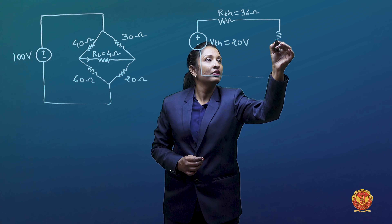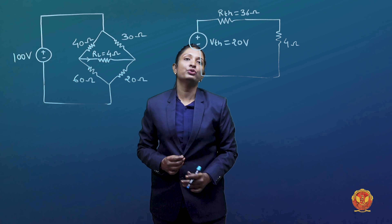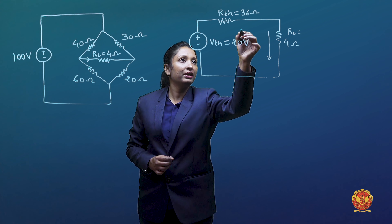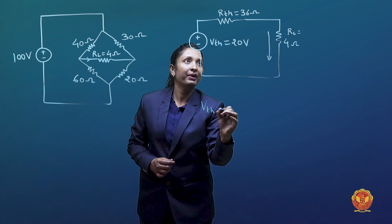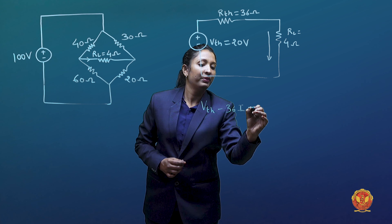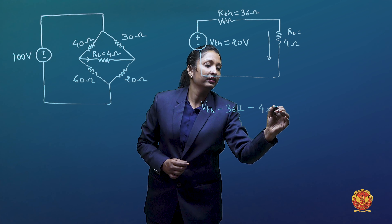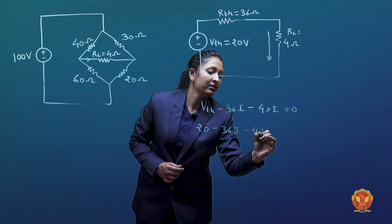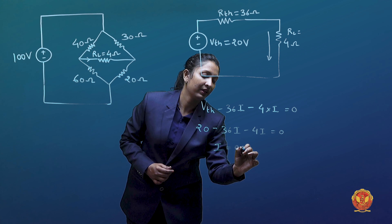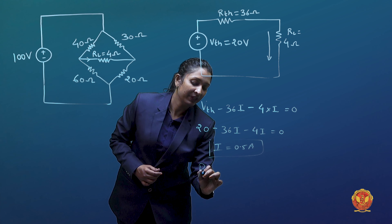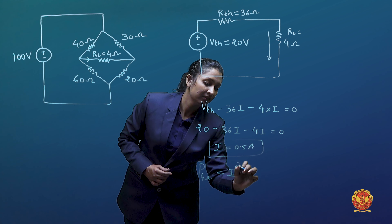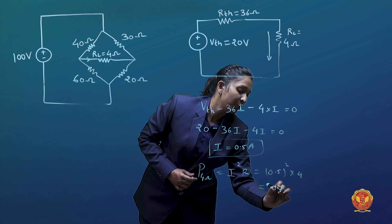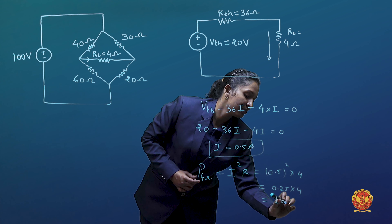With the 4 ohm load connected, if you ask what is the current through the load, we apply KVL around the loop: VTH minus 36 times I minus 4 times I is equal to 0. So 20 minus 40I equals 0, and I is equal to 0.5 A. Similarly, power dissipated by the 4 ohm load is I squared times R, which is 0.5 squared into 4, equal to 0.25 into 4, which is 1 watt.